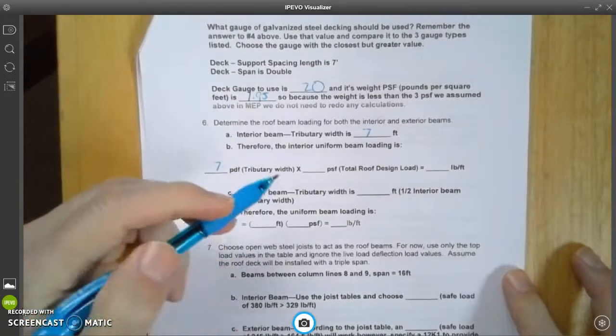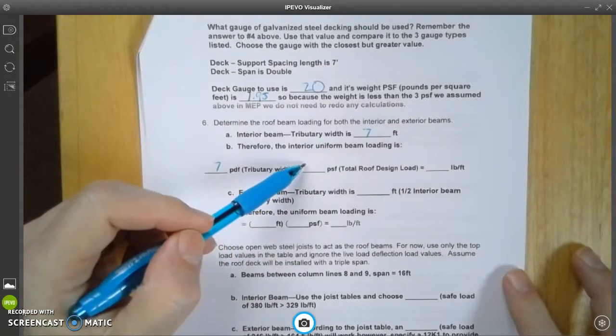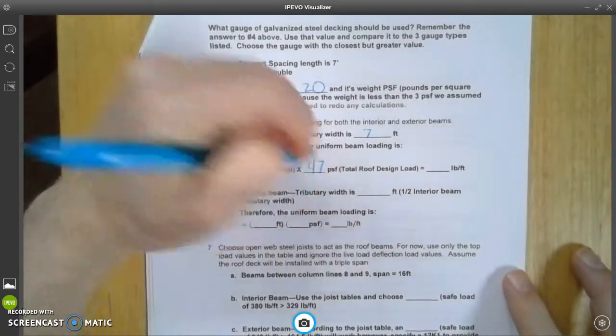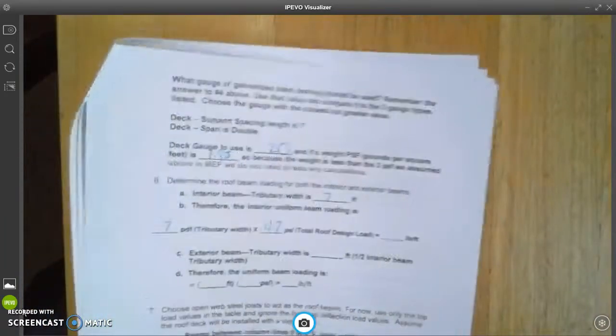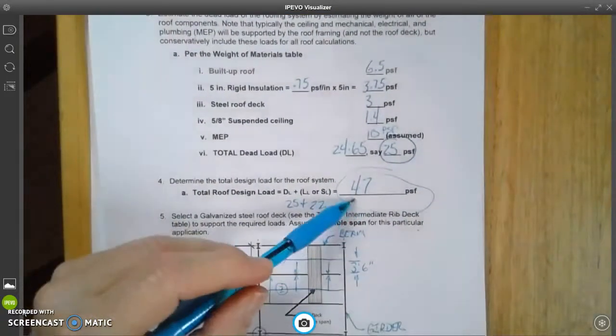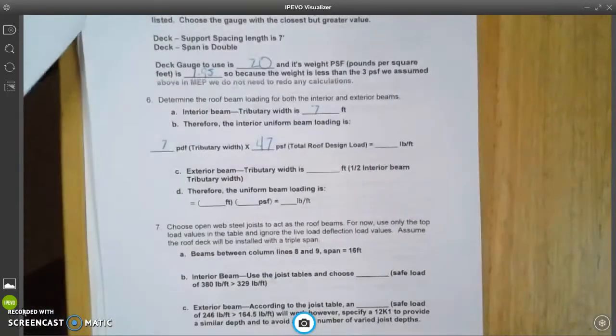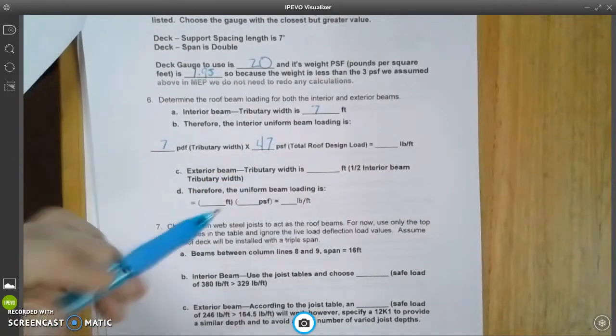and we're going to multiply that times our 47 PSF that we calculated back a few steps right here. So that 47 transfers to this location right here.